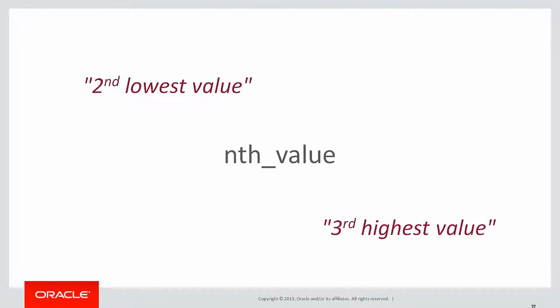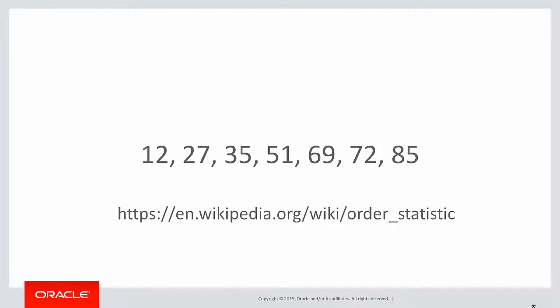And nth_value let us explore those facilities. The reason that was useful is if we look at things like the order statistic wiki page, we can see that often when we're dealing with a sample of numbers, it's useful to remove the outlying numbers and then perform analysis on that, and that's where nth_value might come in handy.